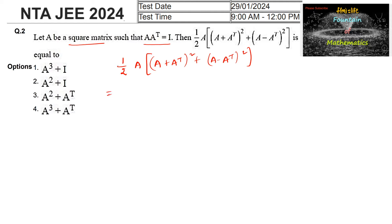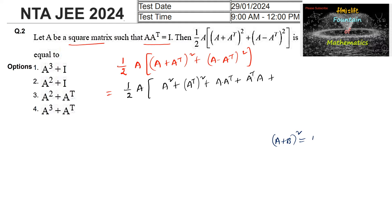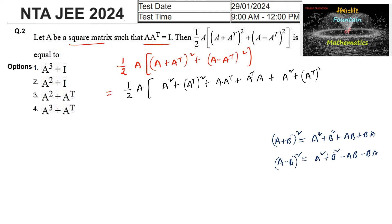We expand using the property that for matrices, (A plus B) whole square equals A square plus B square plus AB plus BA, and (A minus B) whole square equals A square plus B square minus AB minus BA. So (A plus A transpose) whole square gives A square plus A transpose whole square plus A into A transpose plus A transpose into A, and (A minus A transpose) whole square gives A square plus A transpose whole square minus A into A transpose minus A transpose into A.